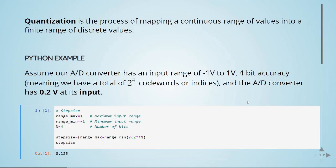A very important thing we have now is the step size. In this case, our step size, using 4-bit accuracy and our range from minus 1 volt to 1 volt, will be 0.125.